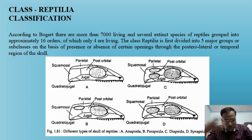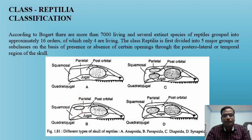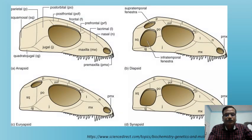Reptiles are mainly divided into four groups based on the structure of the skull. First, Anapsida — without a parietal opening. Then Parapsida and Synapsida, which have one temporal opening. And Diapsida, with two temporal openings on both sides. You can see: no temporal openings, one temporal opening (with two different positions), and two openings.